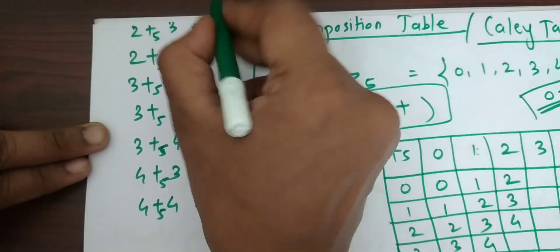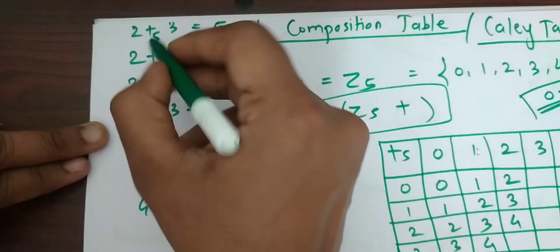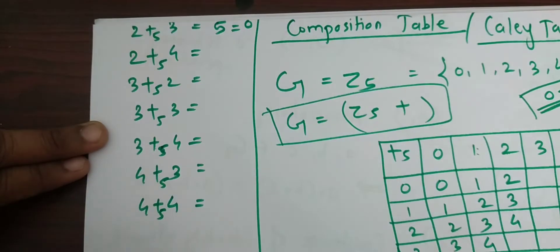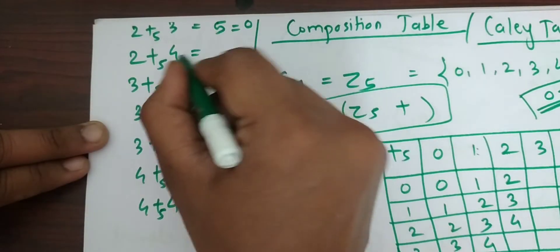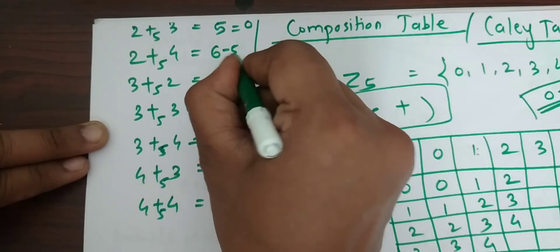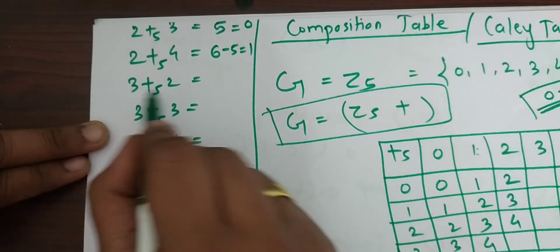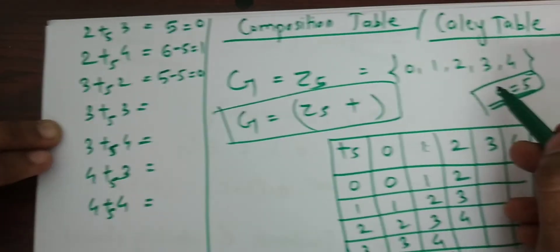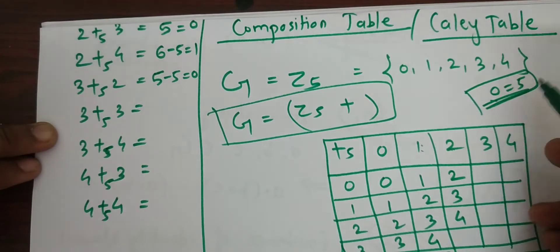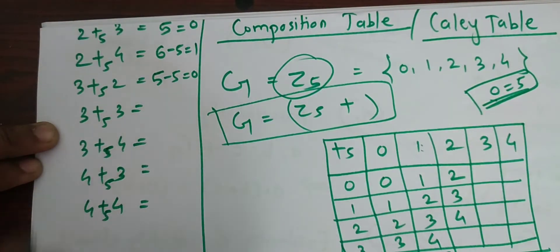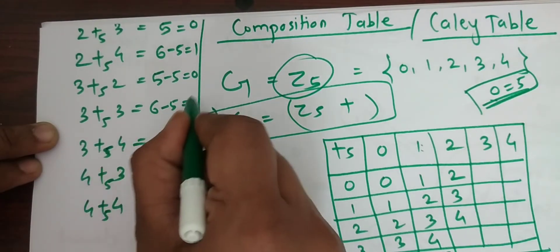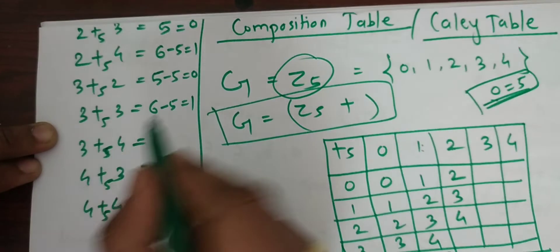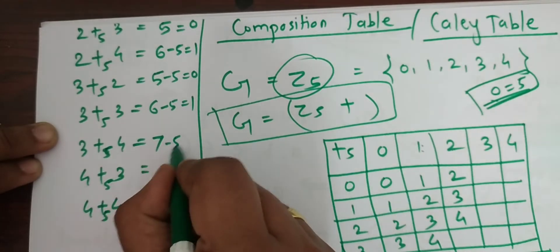2 plus 3 is 5, and under modulo 5 you get 0. 2 plus 4 is 6, and 6 modulo 5 gives 1. 3 plus 2 is 5, and 5 minus 5 is 0, because 0 is equivalent to 5 under addition modulo 5. 3 plus 3 is 6, and 6 minus 5 is 1. 3 plus 4 is 7, and 7 minus 5 is 2.